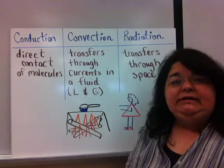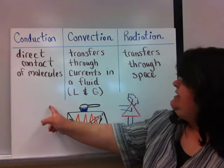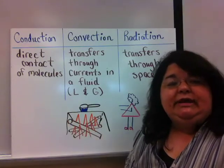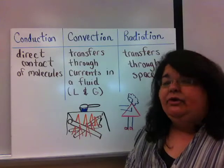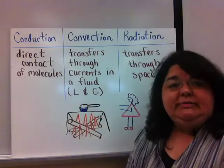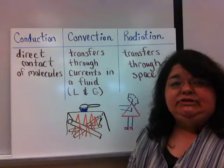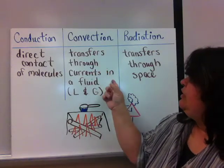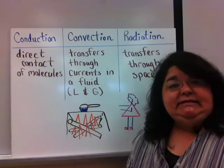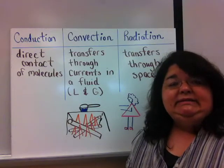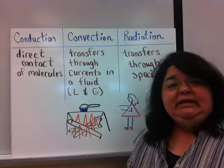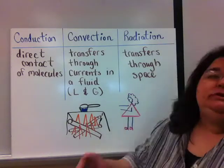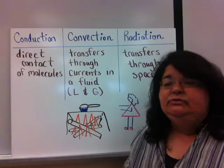There are three different ways to transfer heat: conduction, convection, and radiation. Conduction is when we transfer heat directly from one object to another, so the molecules of the two objects come into direct contact with each other. Convection is when we transfer heat through a current in a fluid — and understand that a fluid is anything that takes the shape of its container, so that can be a liquid or a gas. Radiation is when we transfer heat through space.